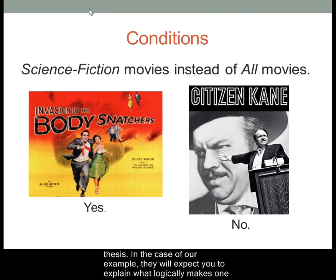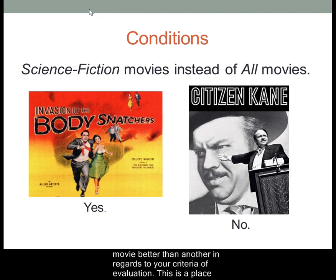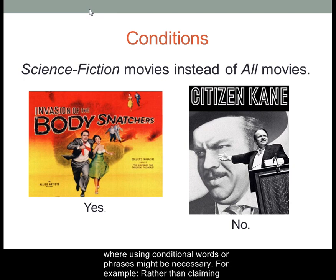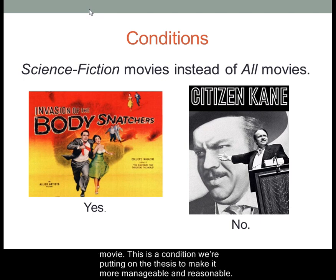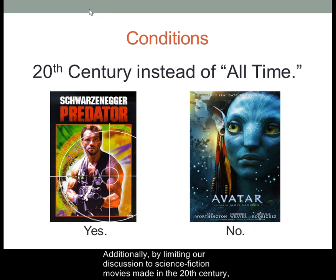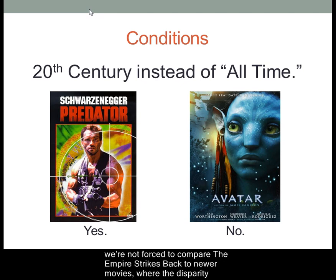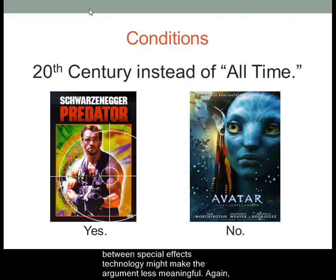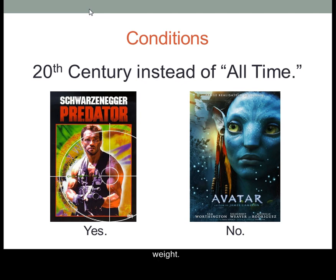In the case of our example, they will expect you to explain what logically makes one movie better than another in regards to your criteria of evaluation. This is the place where using conditional words or phrases might be necessary. For example, rather than claiming that The Empire Strikes Back is the best movie ever, we said it's the best science fiction movie — a condition we're putting on the thesis to make it more manageable and reasonable. Additionally, by limiting our discussion to science fiction movies made in the 20th century, we're not forced to compare it to newer movies, where the disparity between special effects technology might make the argument less meaningful. Being very careful about how you define your argument in your thesis is a balancing act between not overstating your case and not understating it to the point that it carries no weight.